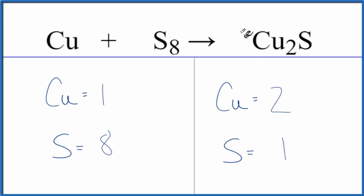It looks like if we put an eight here, we would have one times eight, and that would balance the sulfur atoms. And then 2 times 8, that would give us 16 copper atoms.